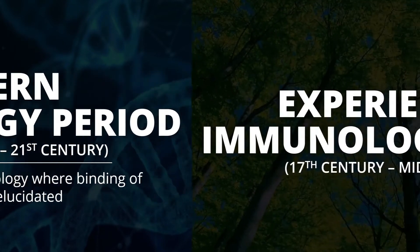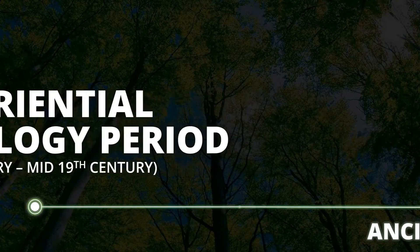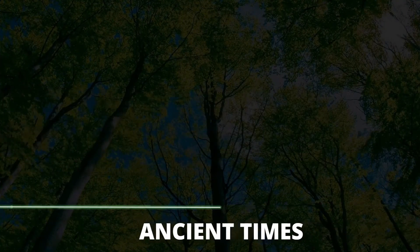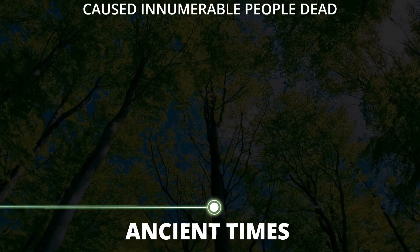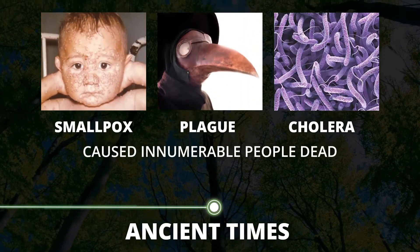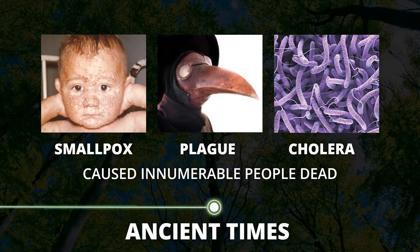For the experiential immunology period, it began during ancient times when many serious infections such as smallpox, plague, and cholera caused innumerable deaths. Since these diseases had no known cure, high mortality rates were observed when individuals were infected.